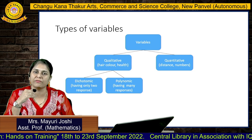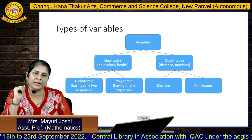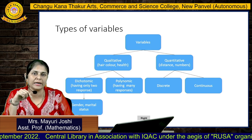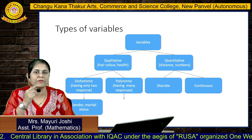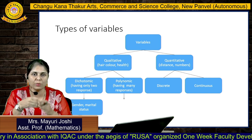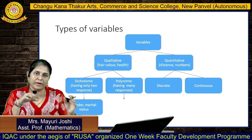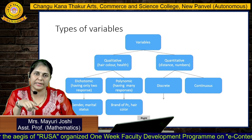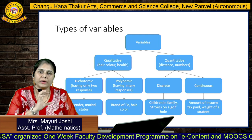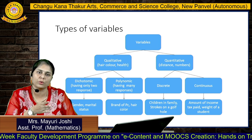Quantitative data is divided into two parts: discrete data and continuous data. Discrete means, for example, number of books — it will be either one or two, not between one and two. Continuous data is defined using class intervals where responses fall within a range.